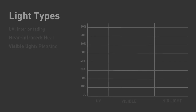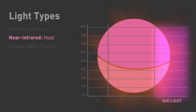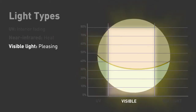Three types of light affect your home environment. Ultraviolet light can slowly damage carpets and other household items. Near-infrared light is responsible for heat gain and contributes to higher energy costs and an uncomfortable interior. In between these is visible light, which is welcome inside the home as illumination.